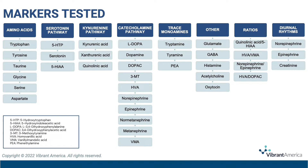Vibrant tests for 30 different markers, including neurotransmitters, amino acids, and metabolites. You can see each analyte tested and listed by their categorization or their corresponding pathway. Vibrant includes many amino acids such as tryptophan, tyrosine, taurine, glycine, serine, and aspartate. Some of these act as building blocks for neurotransmitter synthesis, and others exhibit neurotransmitter-like properties.